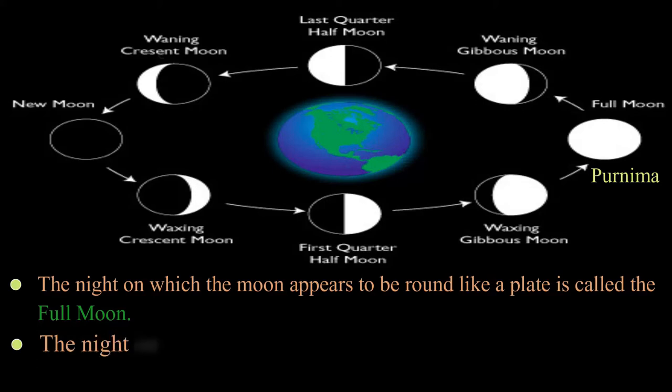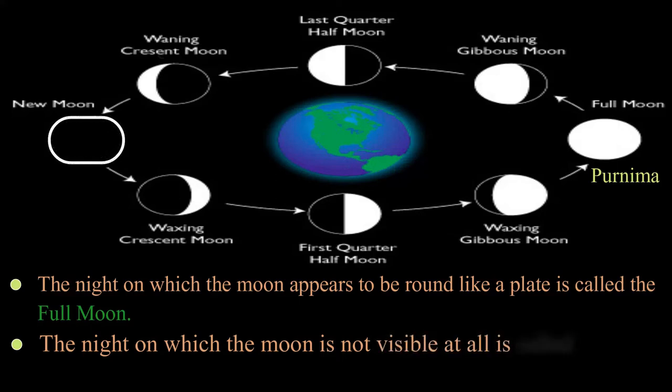After a fortnight of Full Moon night, the Moon is not visible at all. This is called New Moon night or Amavasya.